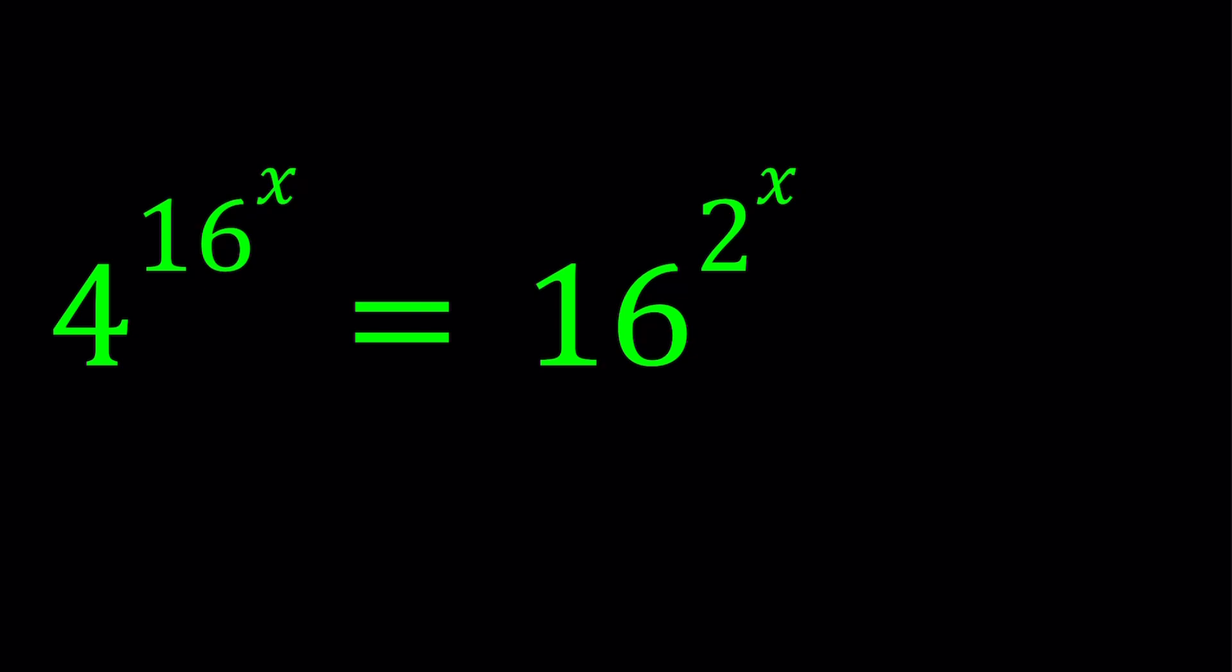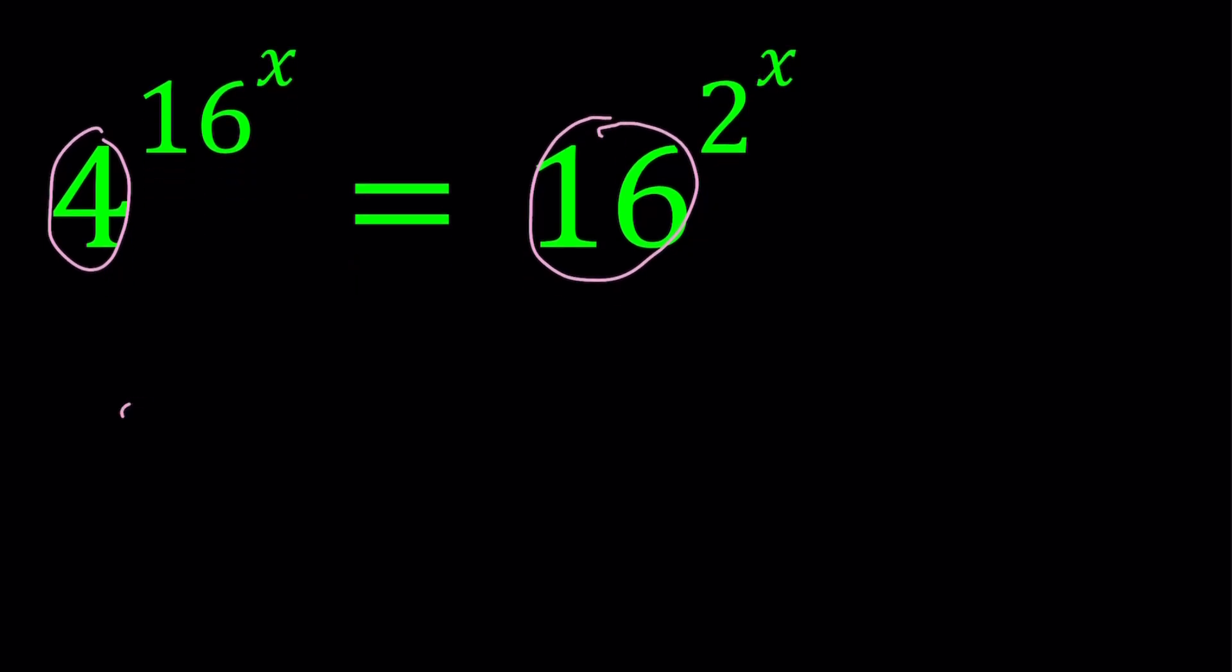And in this case, it's 2, because notice that the very base, 4 and 16, are both powers of 2. So I can write the 4 as 2^2, and then 16^x is just going to stay like that for now, and 16 as 2^4, and then raise it to the power 2^x. Great.